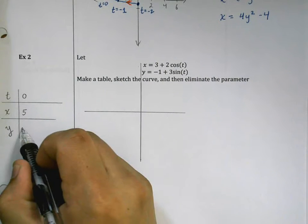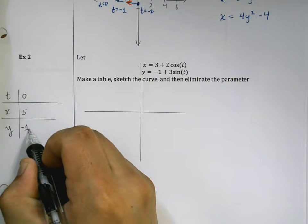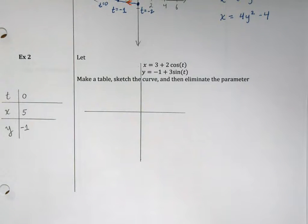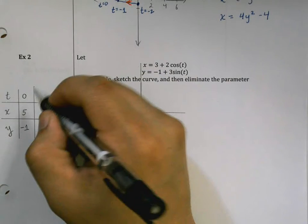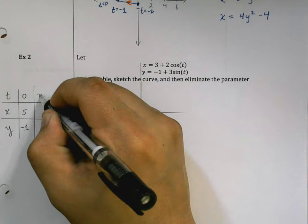Sine of zero is zero, so this point is going to be negative one. I'm going to put a few more in here before I try to graph them. I think I'm going to start out by going in increments of π/2 since I have some cosine and sine functions here.